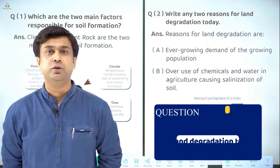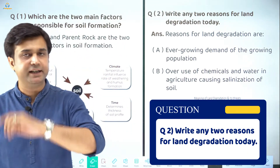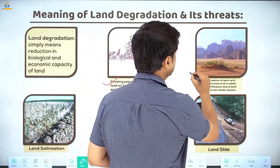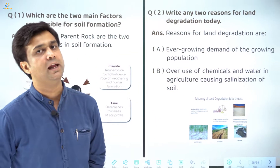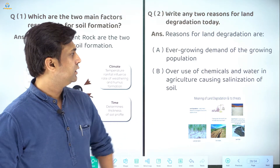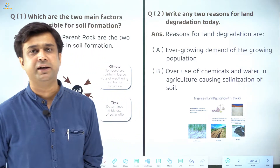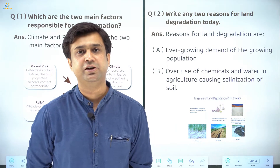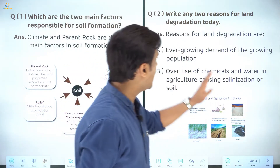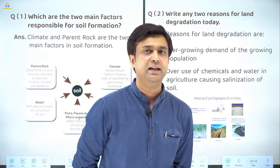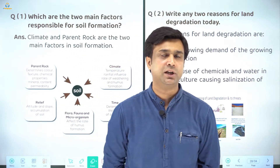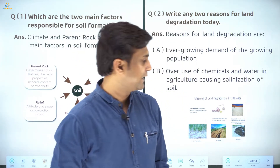The next question is: name two factors responsible for land degradation today. We studied this slide — growing population and its increasing needs is one problem. The second is excessive use of chemicals and water for agriculture in water-deficient areas, which causes land salinization or soil salinization. These are the two important reasons for land degradation. Land degradation means when the biological or economic capacity of land starts declining.